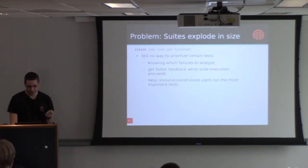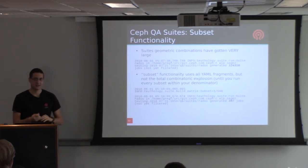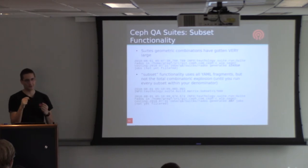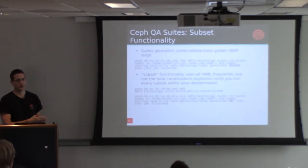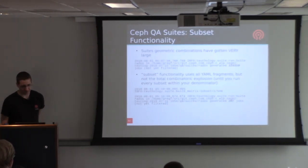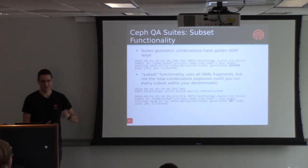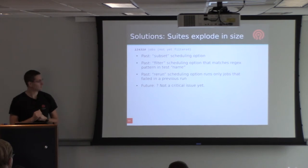The suites explode in size - it's combinatorial. The main RADOS suite is up over 124,000 jobs now. There's no way to prioritize those tests within the framework, no way to say 'this is a very important failure to analyze first,' and resource-constrained users don't know what they should run. There is a subset functionality where instead of using all combinatorial tests it ensures every fragment gets used, and you can specify 'run subset 1 of 200' - as long as you eventually run all 200 subsets you get the entire combinatorial test run, letting you get a reasonable test out of 397 jobs instead of a couple hundred thousand.